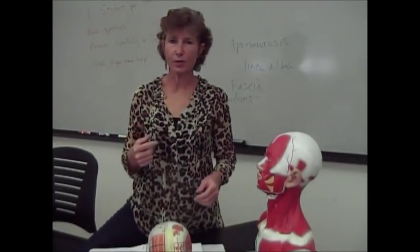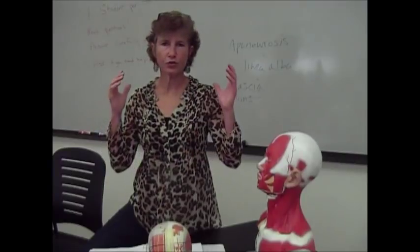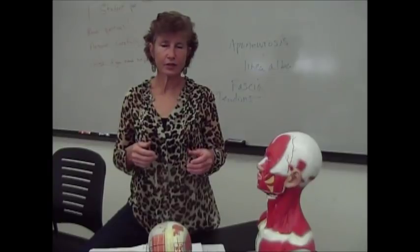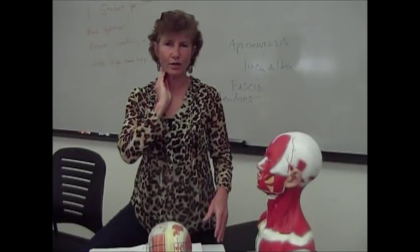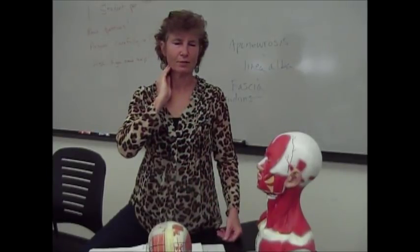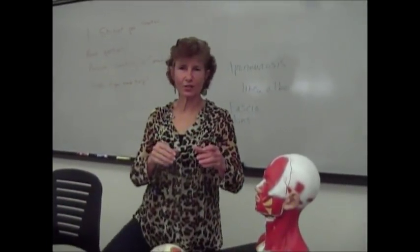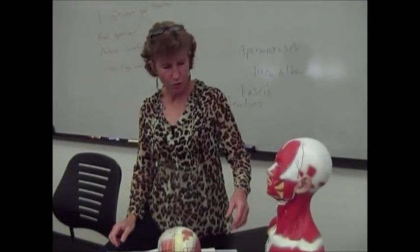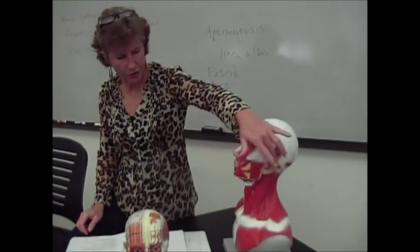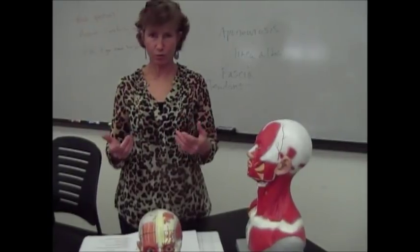The actions of the sternocleidomastoid are a couple. First, it allows you to turn your head — if just one contracts, you turn your head to one side; if both contract, your head goes down and is brought forward. Another action: put your hand on your sternocleidomastoid and take a deep breath. When you think you can't inhale anymore, inhale again and you'll feel it pop out. So it's a synergistic muscle when you're inhaling. The two origins are the clavicle and the sternum, and the action is it pulls your head toward your shoulder or, when both work together, down like that, and it also helps with inhaling.